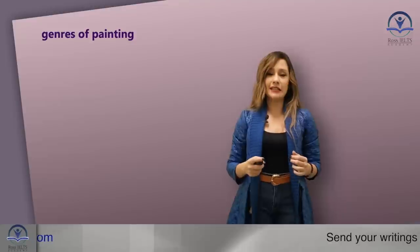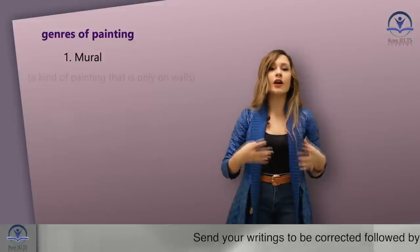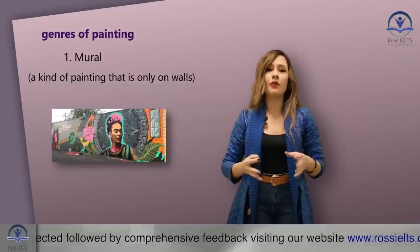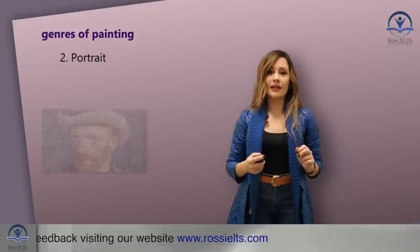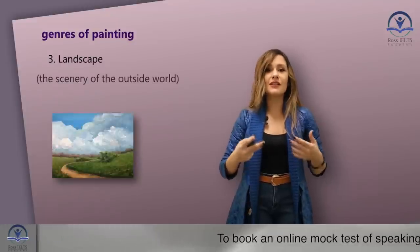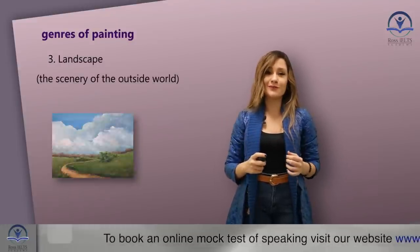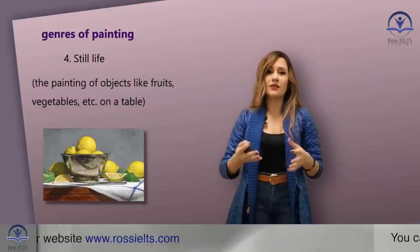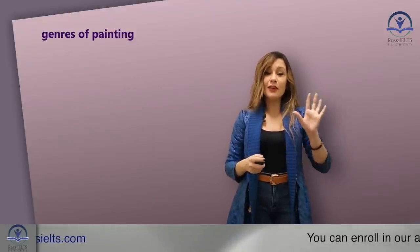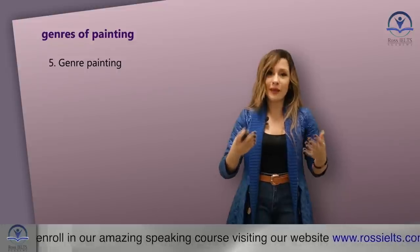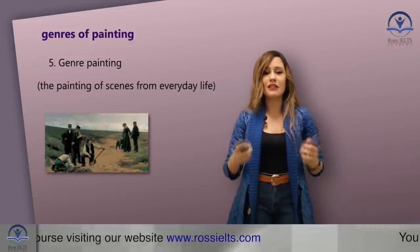There are also different types of painting — we can call them genres of painting. The first is mural, a kind of painting only on walls; for example, once in Mexico I saw many beautiful murals on the street. The second is portrait, the painting of a person only. The third is landscape — the scenery of the outside world. The fourth is still life, when you paint objects like fruits and vegetables on a table. And the fifth is genre painting — this is a kind of painting itself, depicting scenes from everyday life.